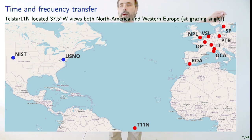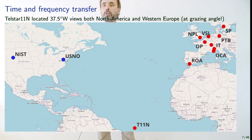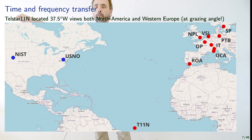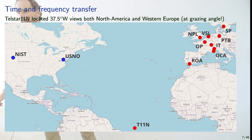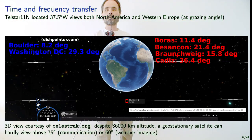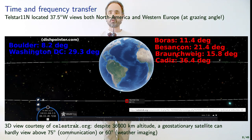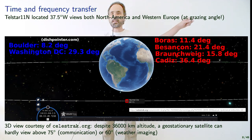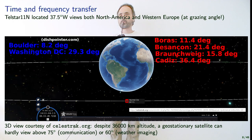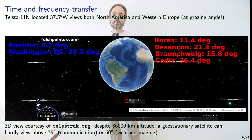If you want to do this in the US, all the laboratories are in Western Europe. The selection of Telstar 11N allows communication with NIST in Boulder, Colorado, and USNO in Washington, DC. Even though the satellite is 36,000 kilometers away, the signal is grazing in Boulder at only 8 degrees above the horizon. In north Europe it's 11 degrees; in Besançon it's 21 degrees; and at the east-west German border at PTB Braunschweig, it's only 16 degrees.